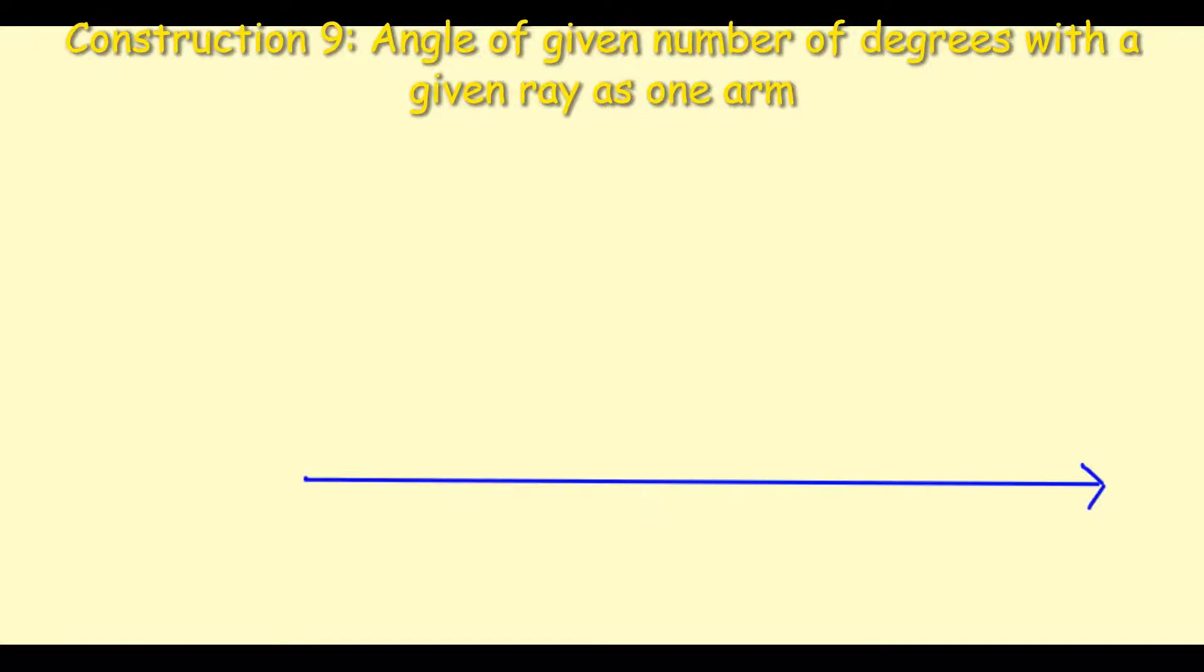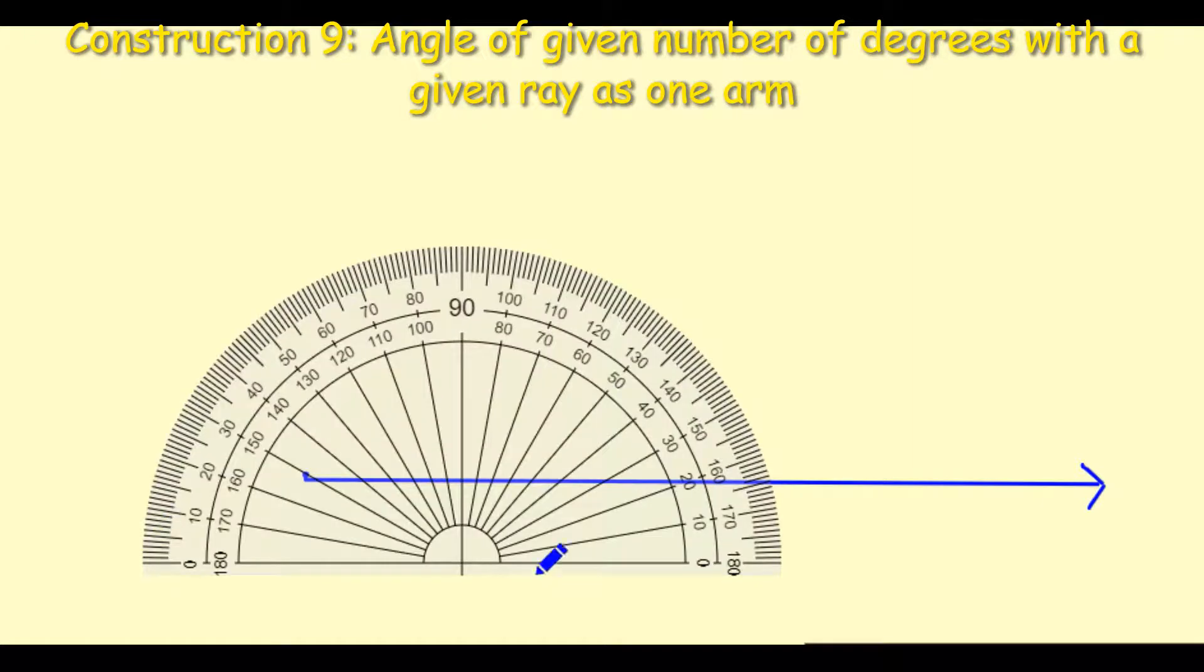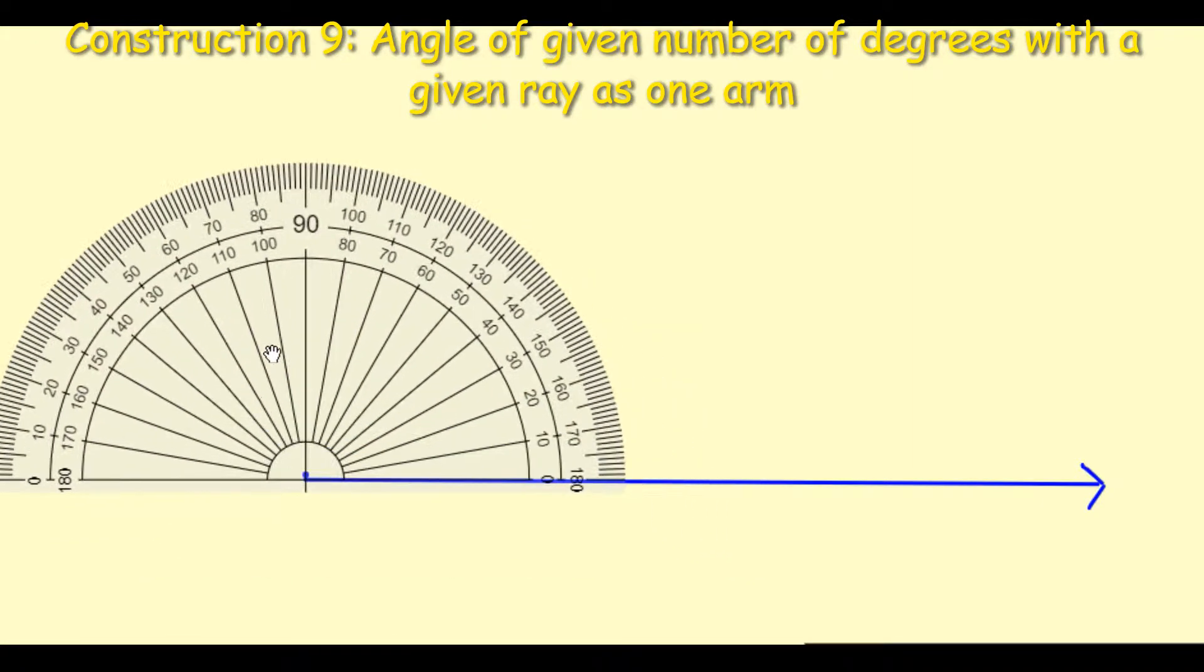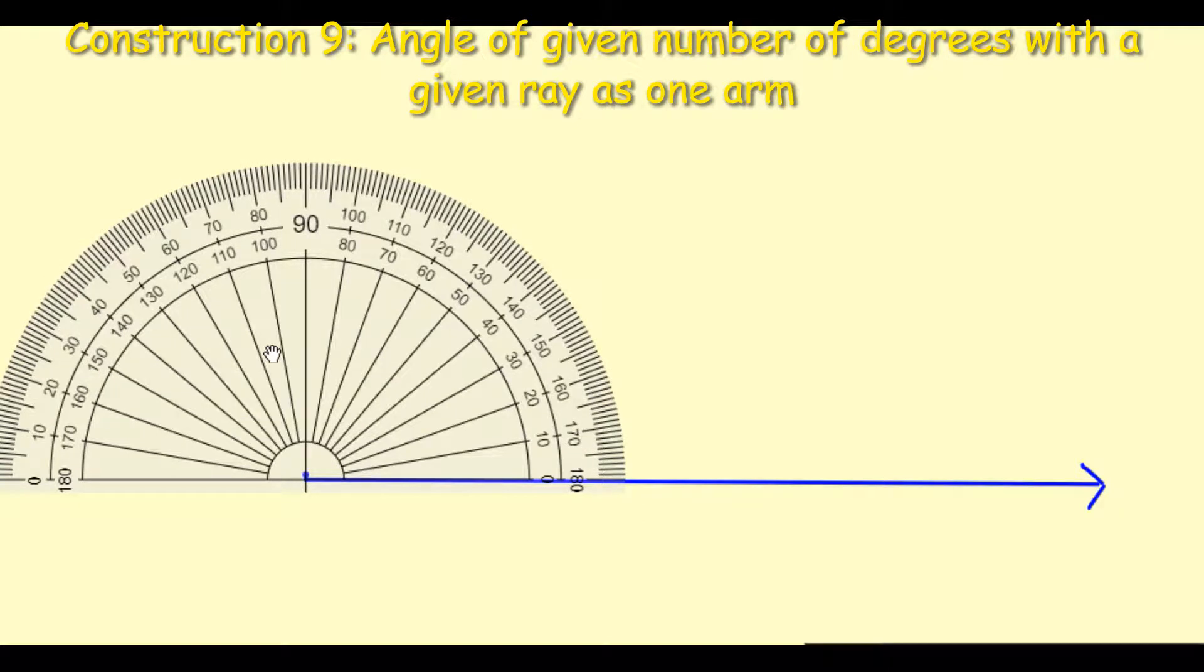Now I want to use my protractor to construct the angle of 55 degrees. I'm going to take out my protractor now and I'm basically going to sit my protractor at that point, so you can see here that it must tie up with that dot and the line.